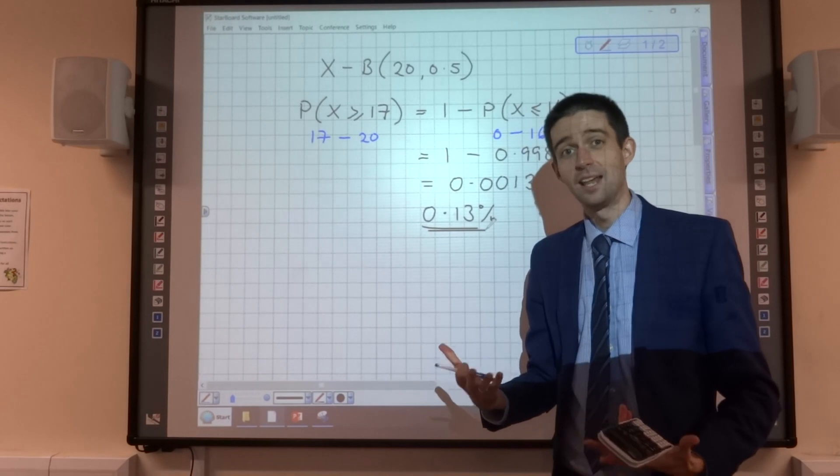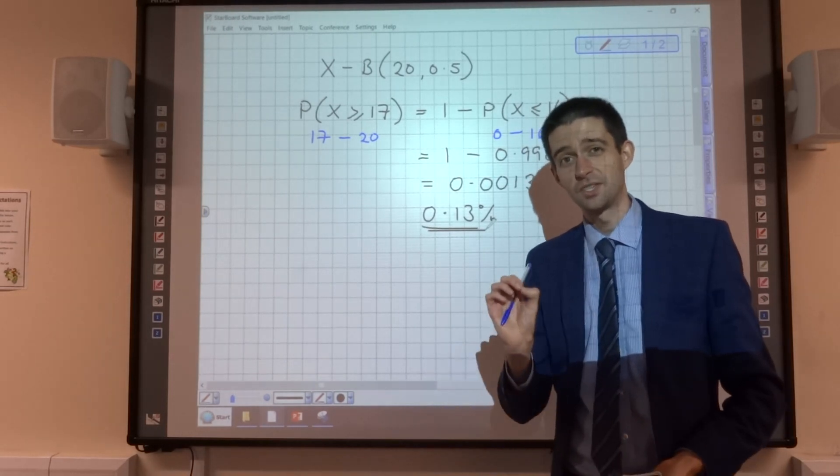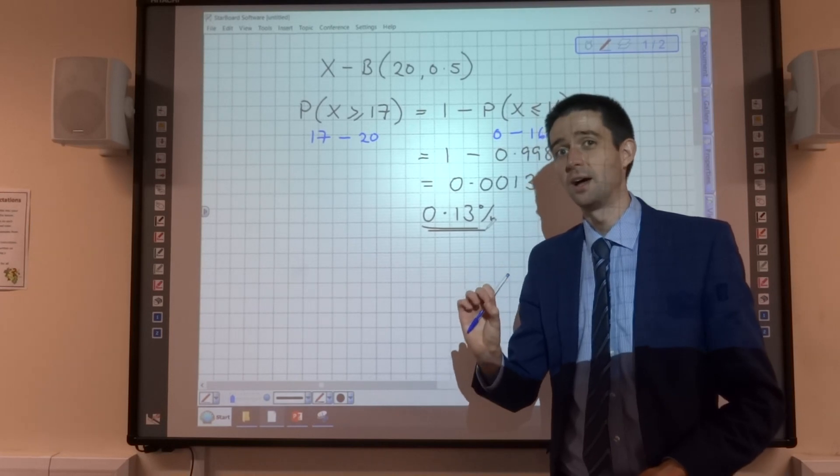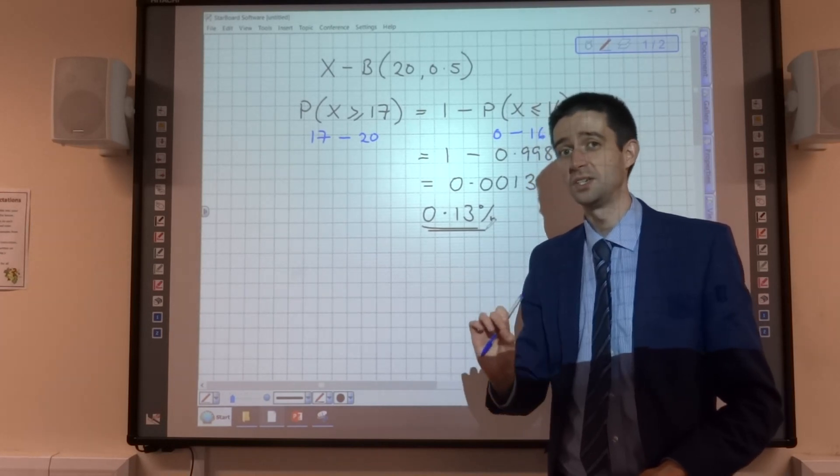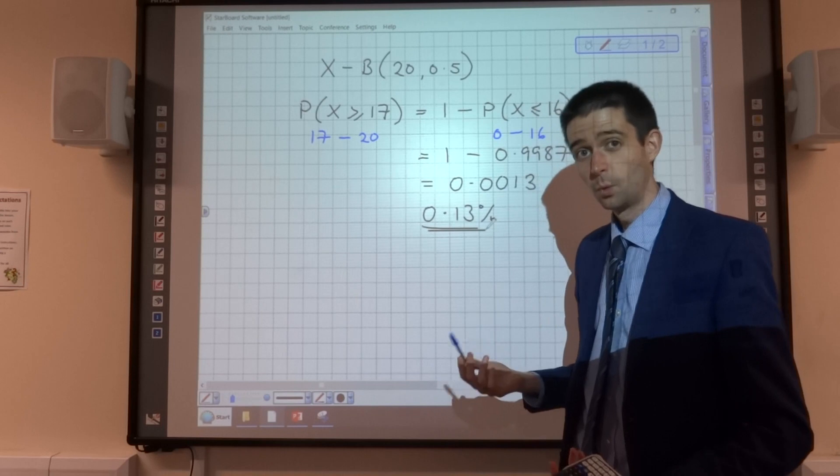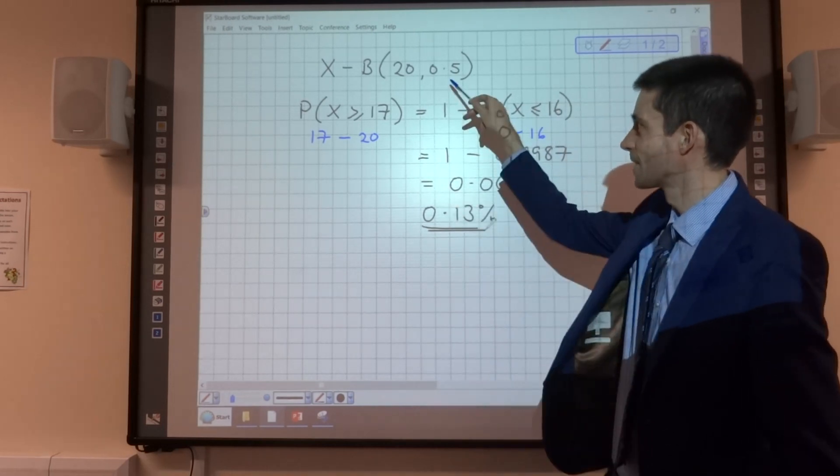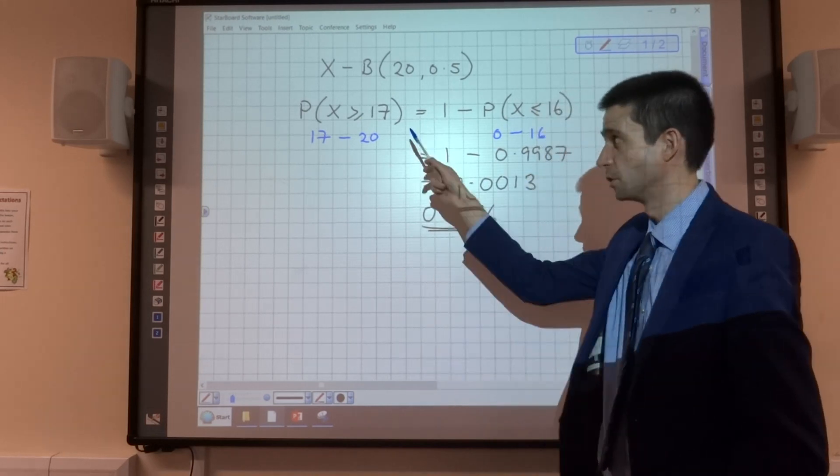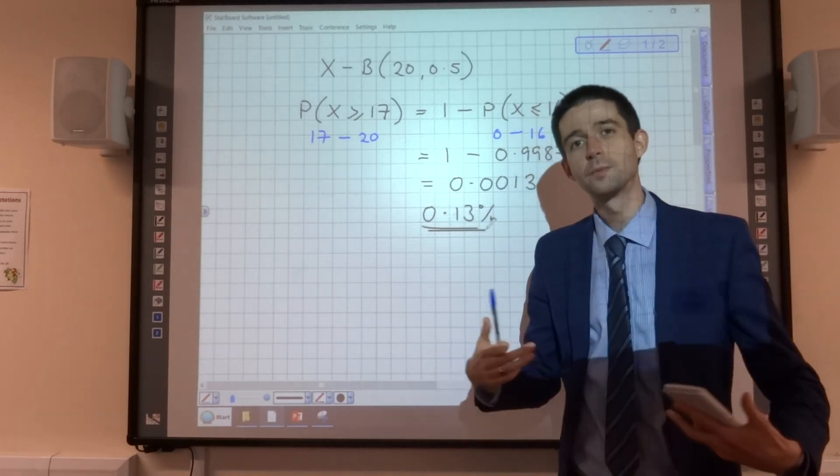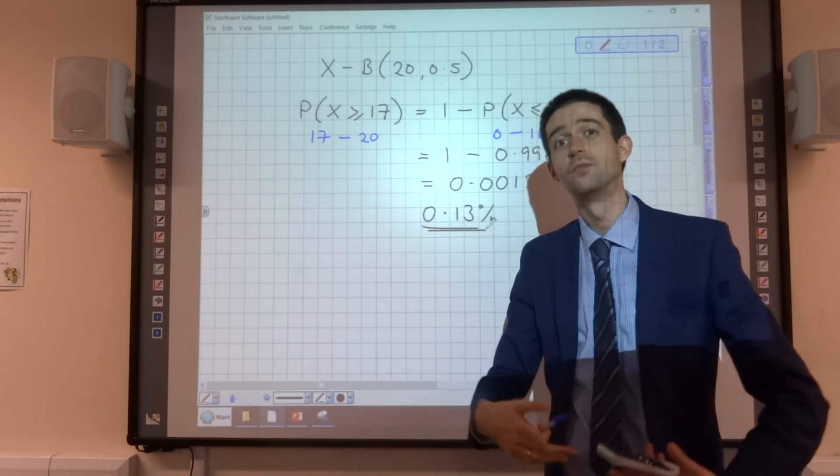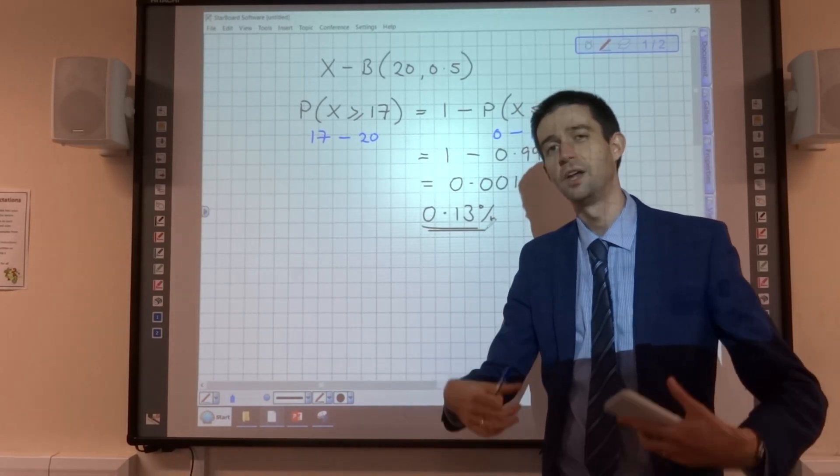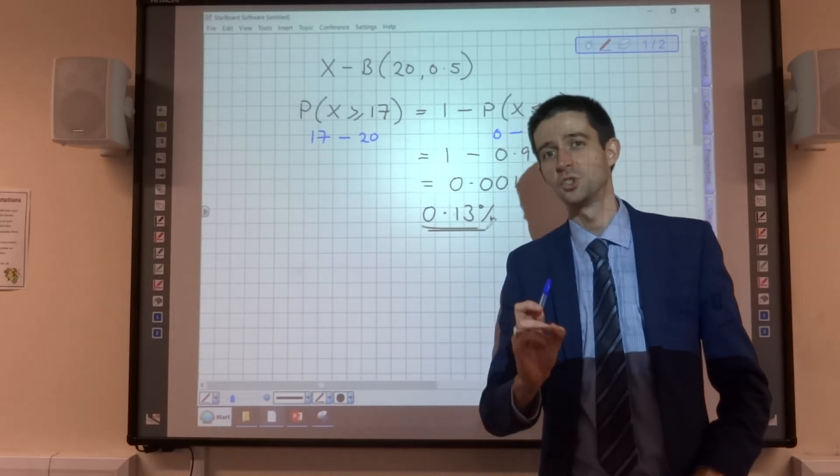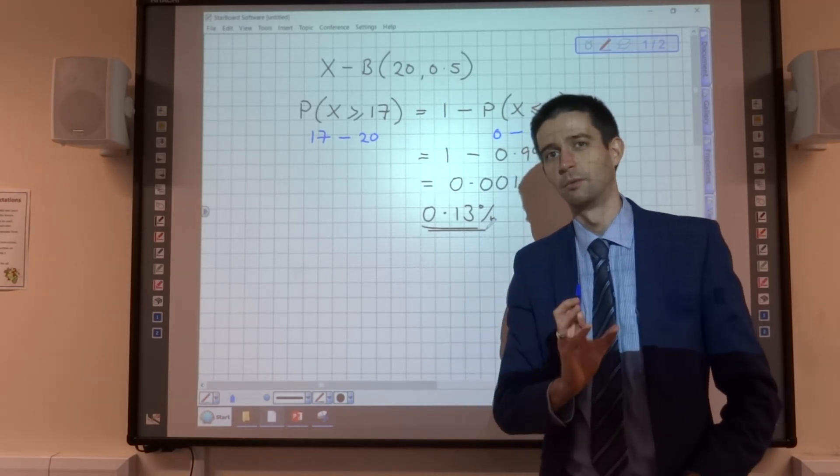We decide on a level of significance, which is the percentage chance that we say if it goes below that, then it's unlikely enough that we doubt that the probability is actually true. So what we'd be saying in this case is, I don't think the probability of getting a head with your coin is 0.5. I think it's greater because you've got too many heads. So what I'm going to do now is go through an example where we formalize that using the notation. But it all hinges on the idea of, is what's just happened so unlikely that we doubt the probability is true?